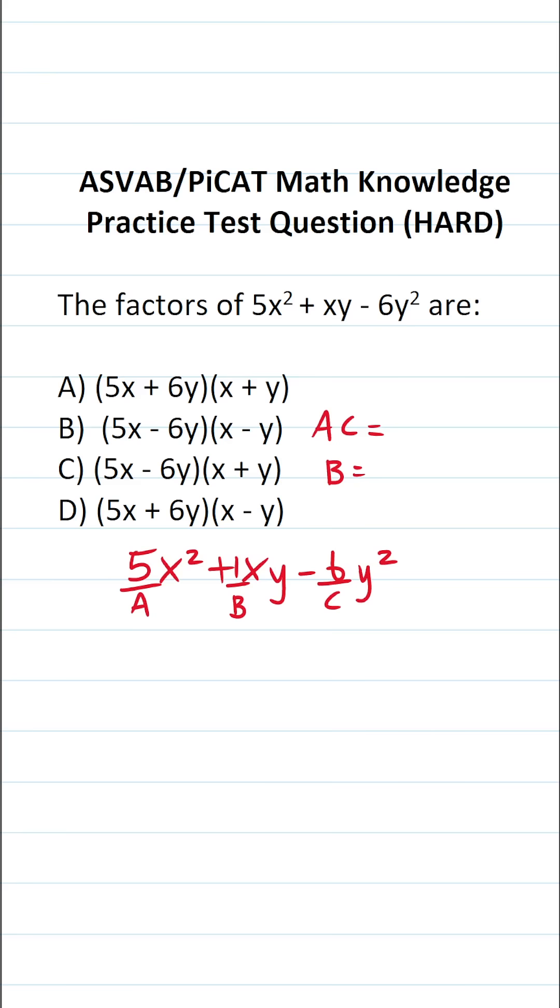A times C, 5 times -6 is -30. B is right here, as I pointed out, it's 1. So the AC method says we're looking for two numbers that multiply to -30 but add to positive 1. That's going to be -5 and positive 6.